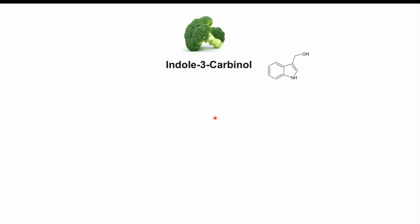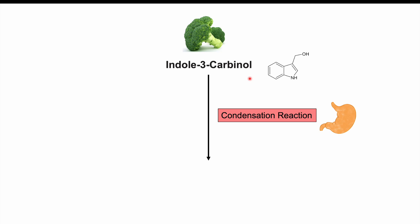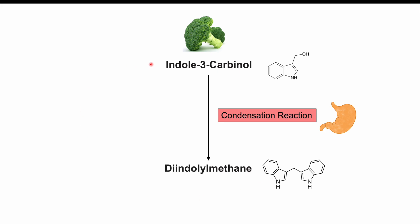Let's first talk about indole-3-carbinol. DIM is a metabolite of this particular phytochemical. When indole-3-carbinol enters the stomach, it undergoes an acid condensation reaction and dimerizes into diindolylmethane. Looking at the structure, we can see it is two of those indole structures attached together. Essentially, when you consume indole-3-carbinol from a cruciferous vegetable, it immediately becomes dimerized into DIM. This is the metabolite that enters our body and gets into our bloodstream, whereas indole-3-carbinol itself is not found in the bloodstream at all.